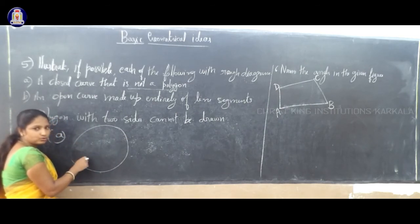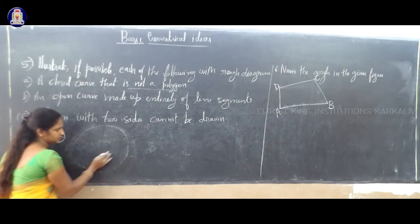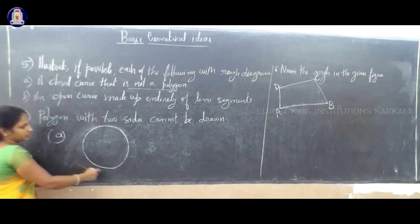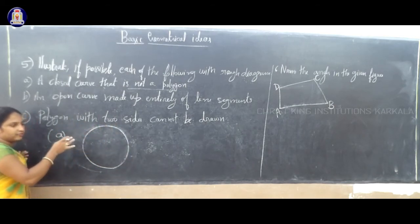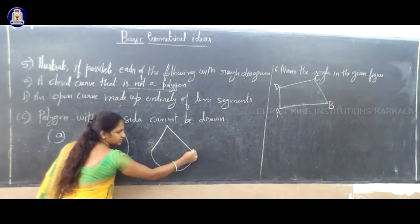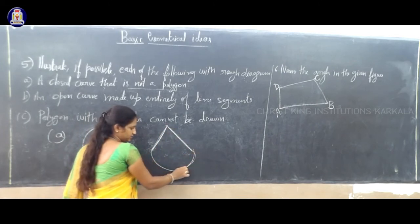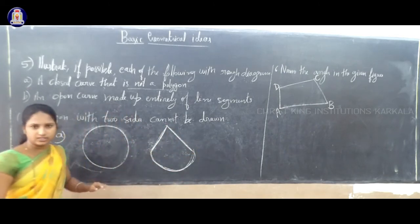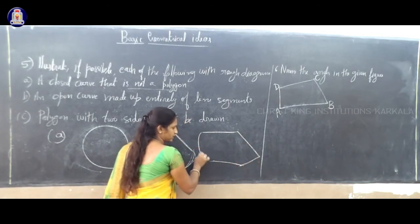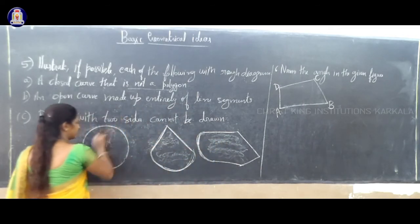Polygons have more than two line segments. But here, if I draw a circle or a shape with one arc and two line segments, this is not a polygon — this is a closed figure but not a polygon. You can draw like this — with two line segments and one arc — and it looks like a closed figure but it is not a polygon.